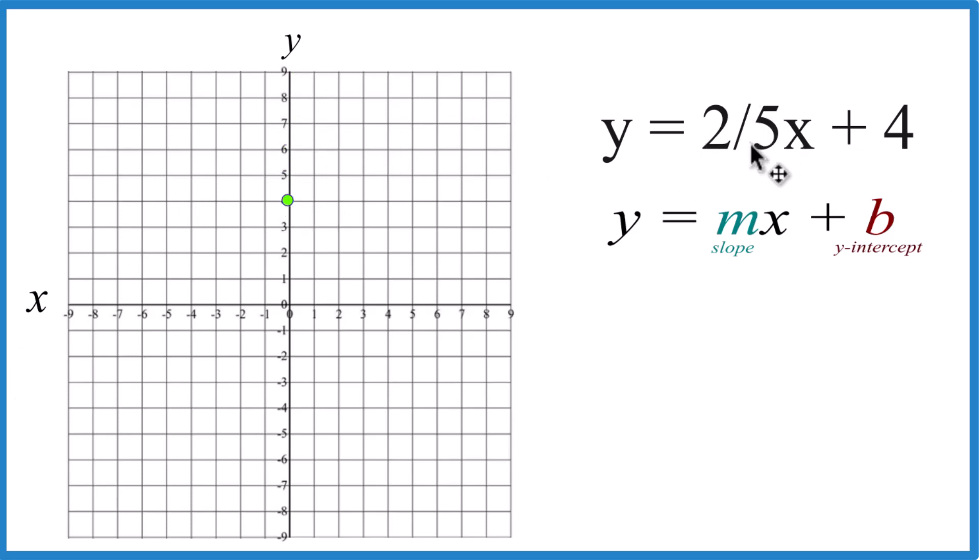For the two-fifths x, two-fifths as m, that's the slope. So think about it as rise over run. Rise two, run five.